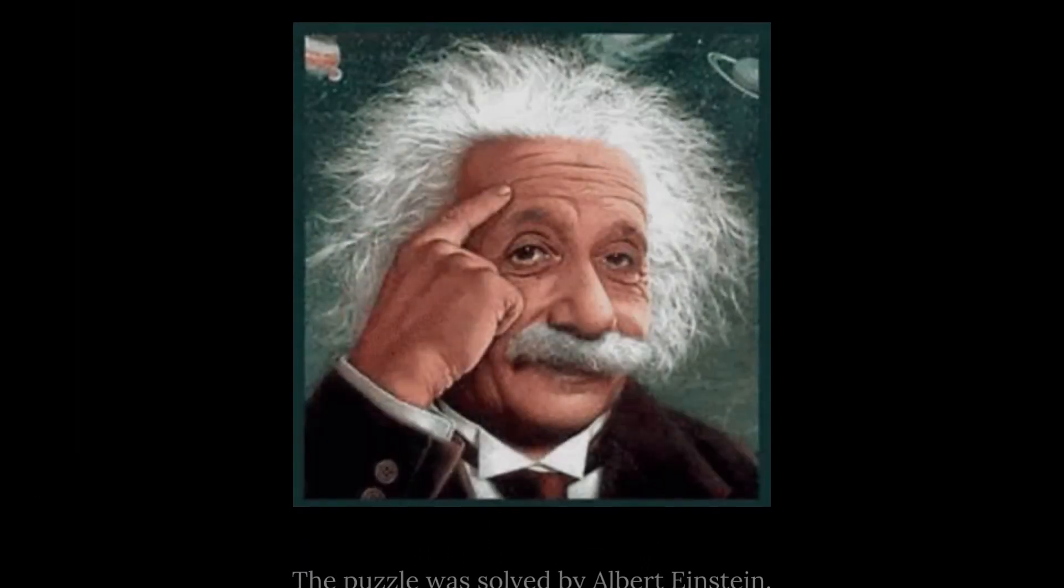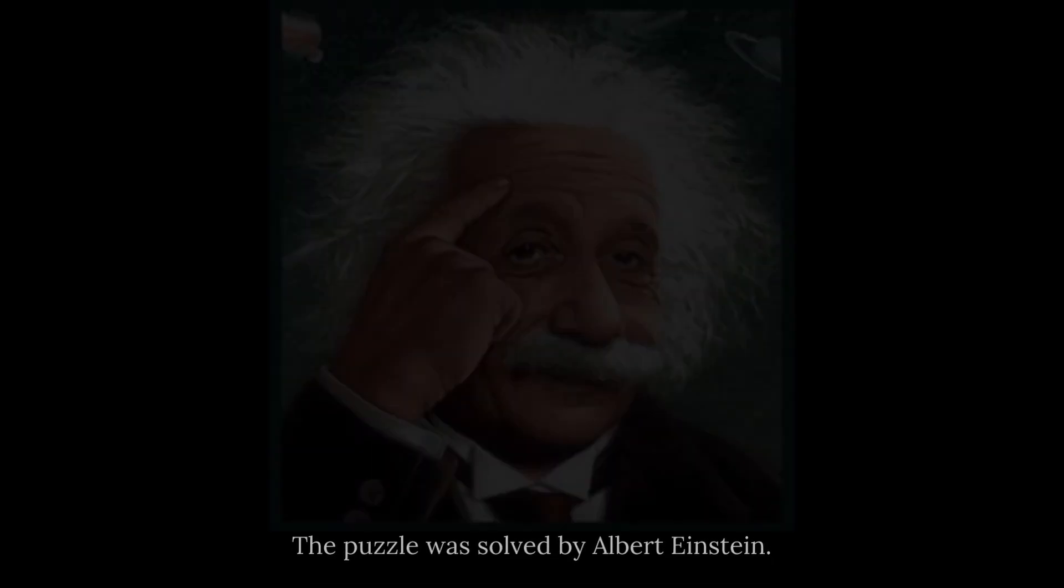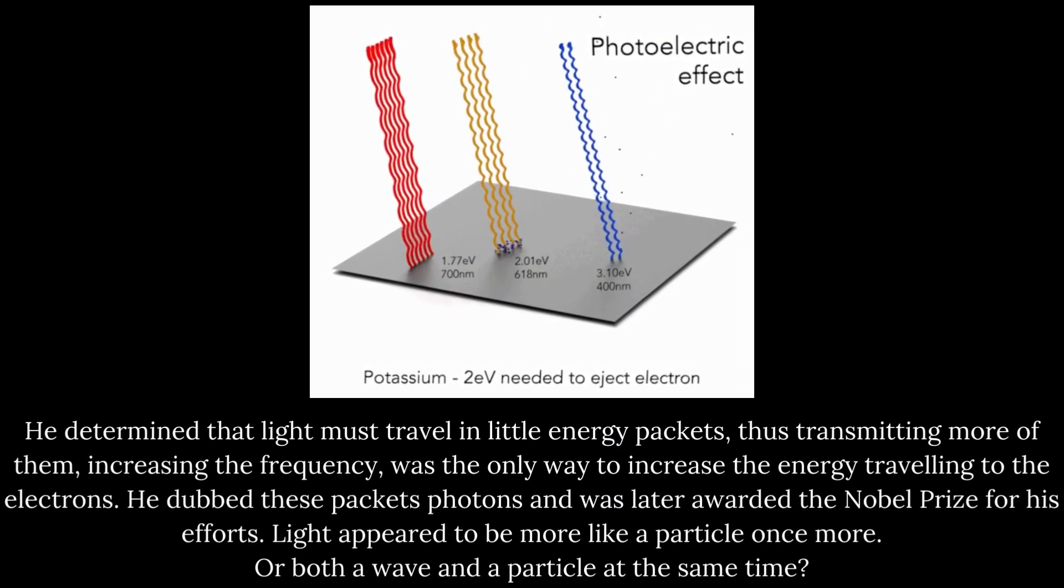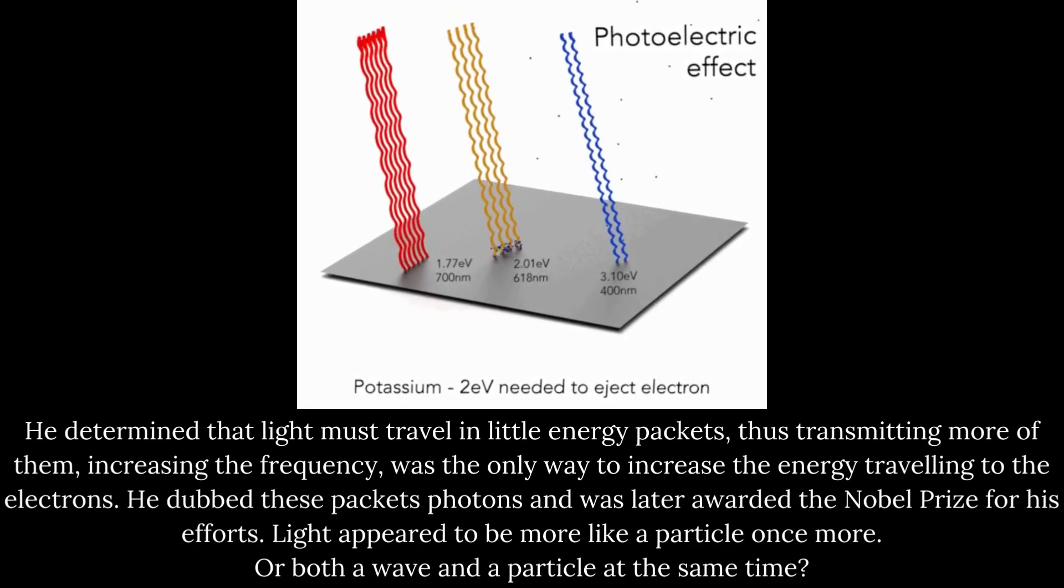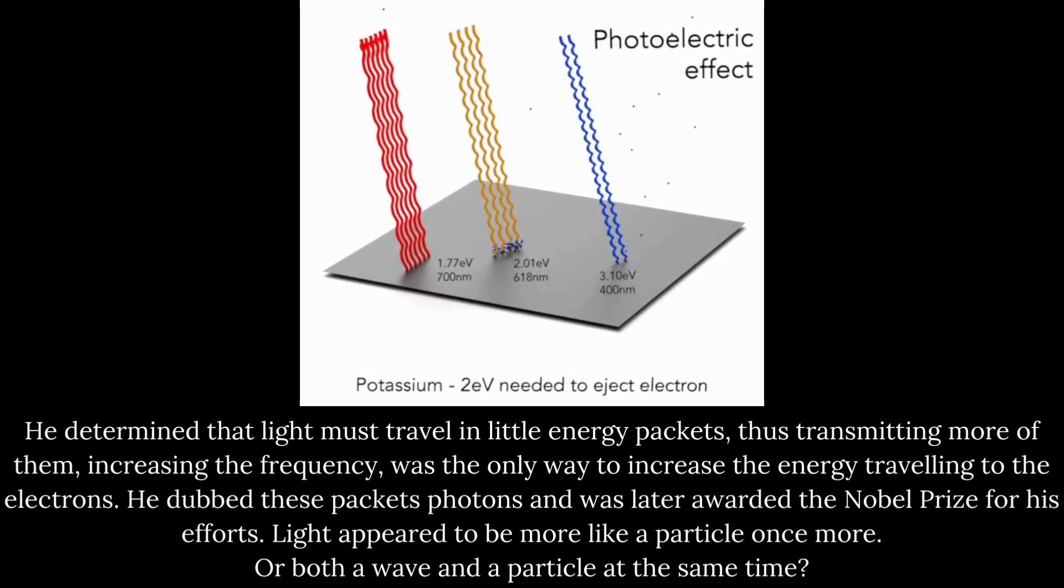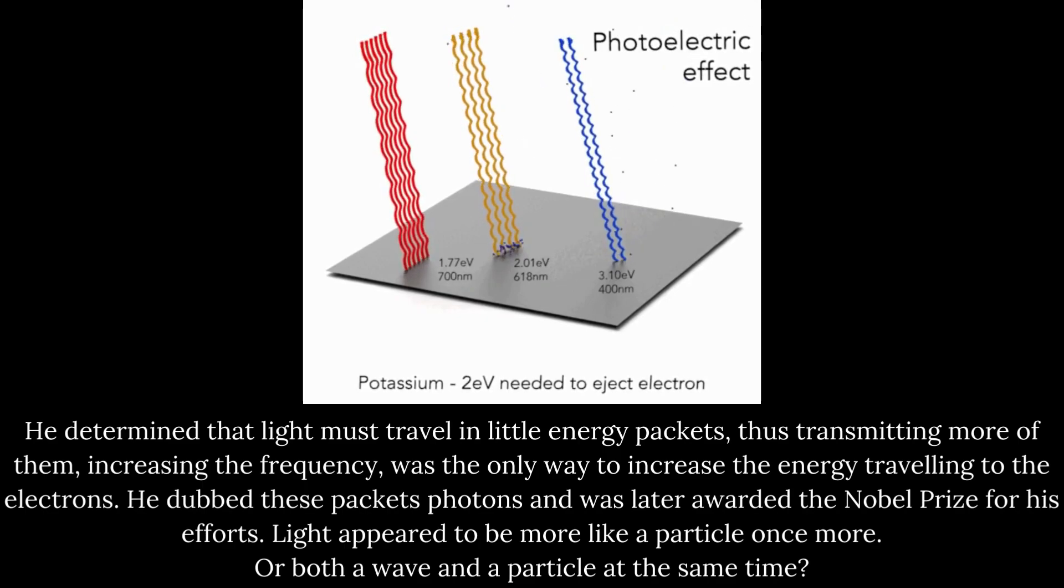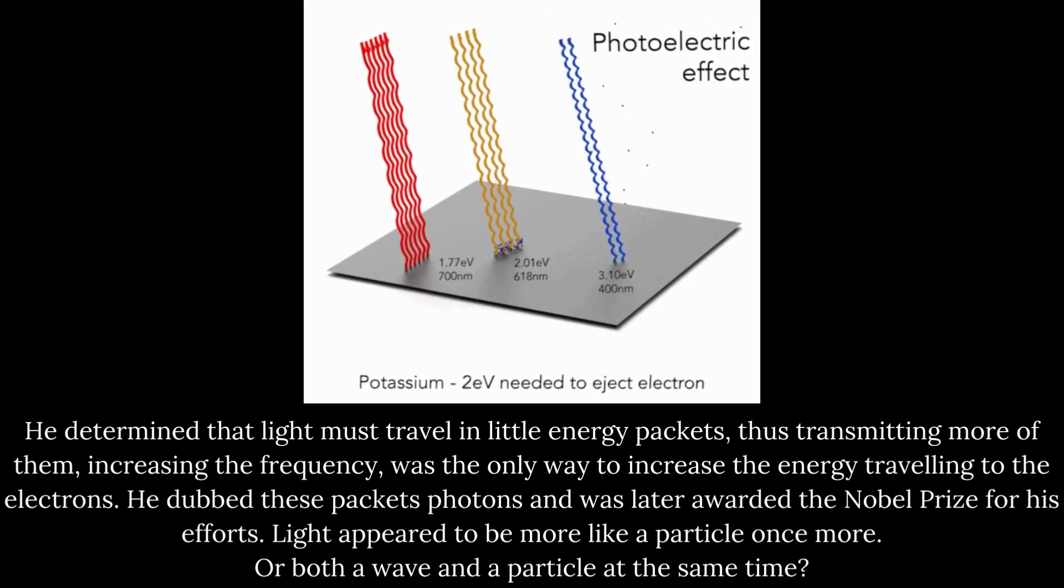The puzzle was solved by Albert Einstein. He determined that light must travel in little energy packets, thus transmitting more of them, increasing the frequency, was the only way to increase the energy traveling to the electrons. He dubbed these packets photons and was later awarded the Nobel Prize for his efforts.